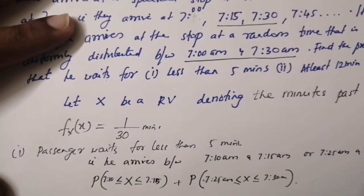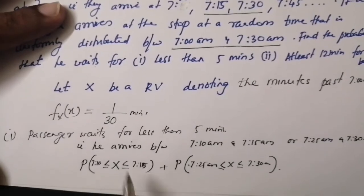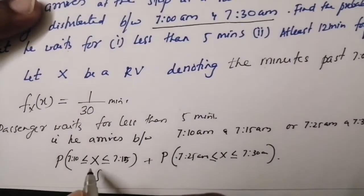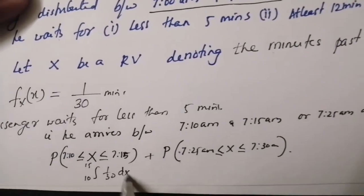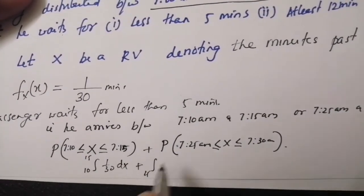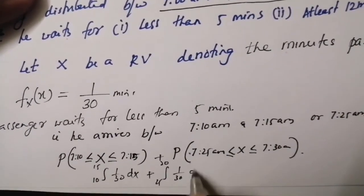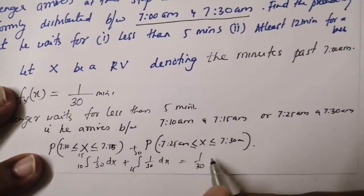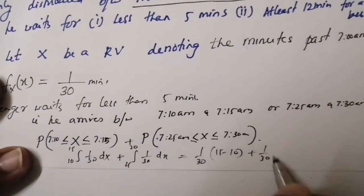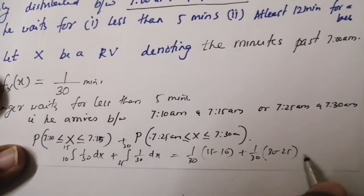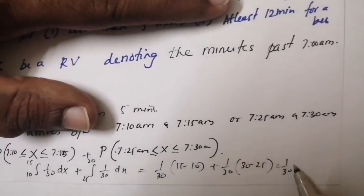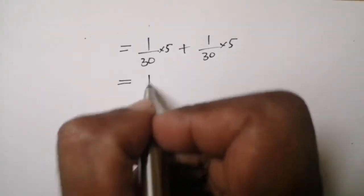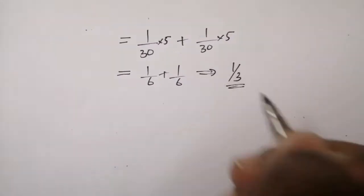The probability is the integral of the PDF: integral from 10 to 15 of (1/30) dx plus integral from 25 to 30 of (1/30) dx. This equals (1/30)·(15 − 10) + (1/30)·(30 − 25) = (1/30)·5 + (1/30)·5 = 1/6 + 1/6 = 1/3.